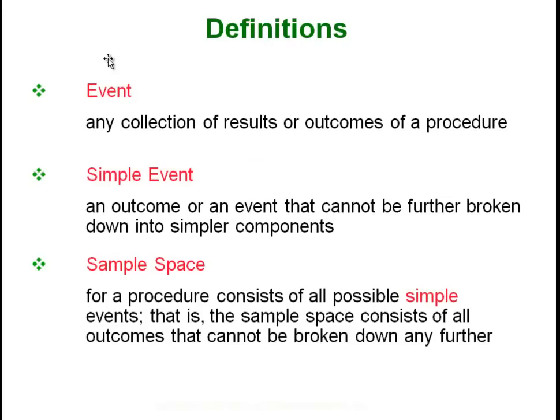So let's start with vocabulary. An event is any collection of outcomes for a particular question or experiment. A simple event is something that can't be broken down into simpler steps or components, and then your sample space is the entire collection of your events.